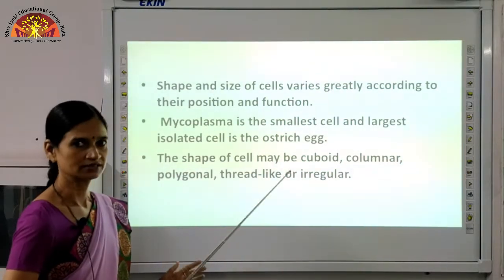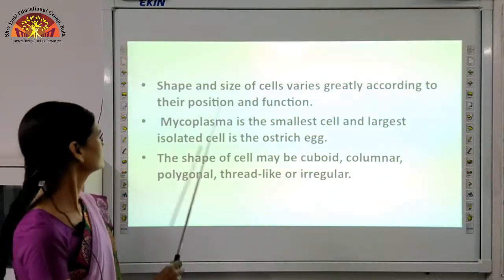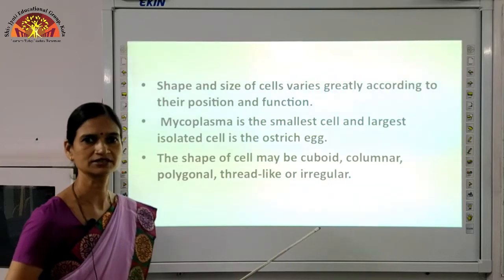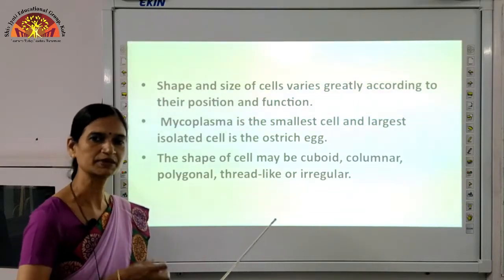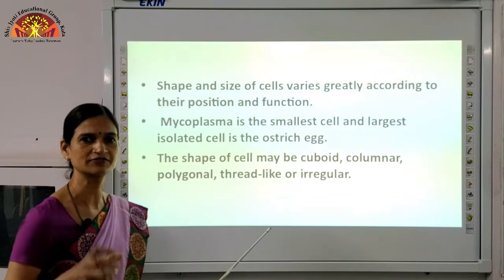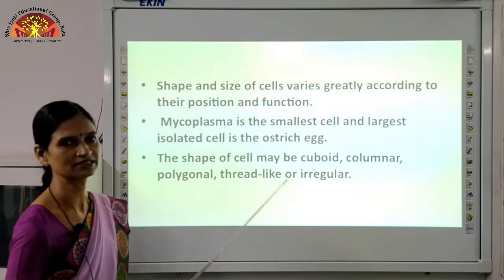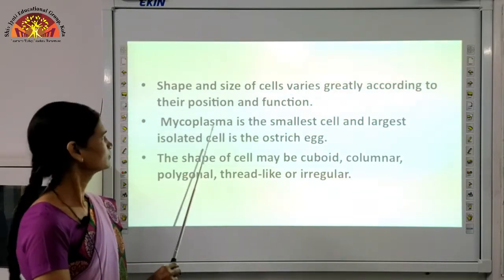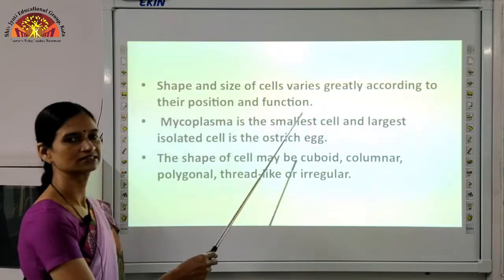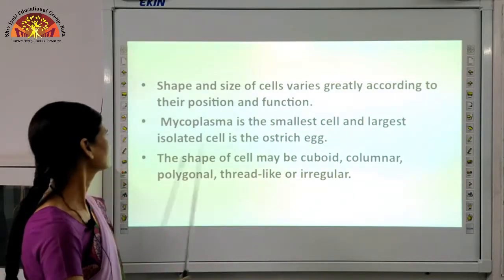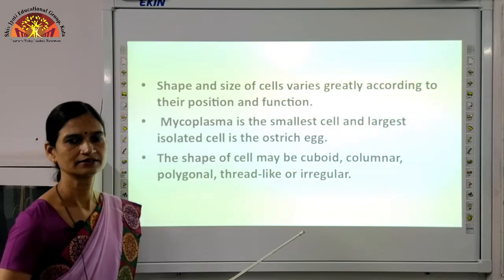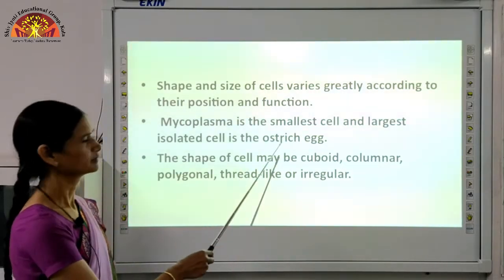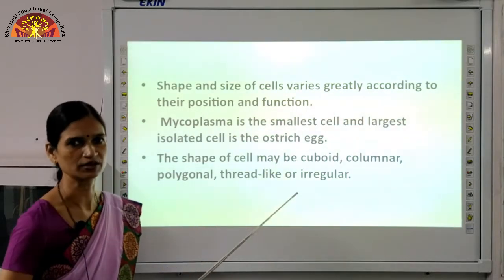Now we talk about the general characters of all cells. The shape and size of cells varies greatly according to their position and function. Our body has millions of cells with many different shapes and sizes. Mycoplasma is the smallest cell, and the largest cell is the ostrich egg — all eggs are also single cells.